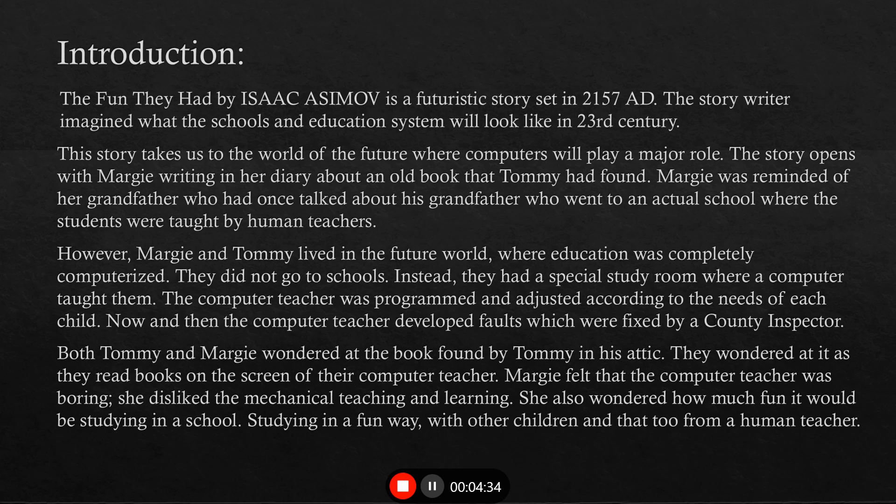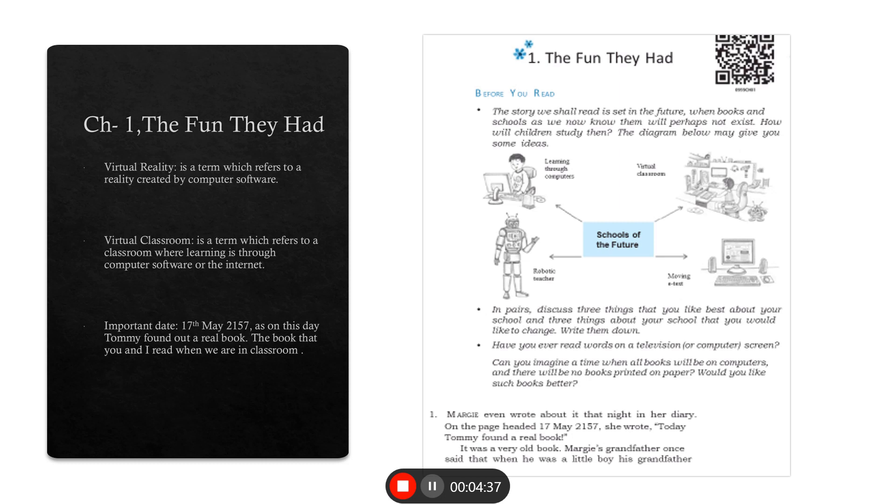Now let's read the chapter and you will have a better understanding of what we were talking about. This is the chapter as it appears in your book. Before we begin, I would like to talk about two particular points: virtual reality and virtual classroom. Children, virtual classroom is a term which refers to the classroom wherein teaching and learning is done using the help of computer software or the internet, like we all do. On the other hand, virtual reality is wherein everything which is created is by using computer software. We will get to know about them better as we read the chapter.